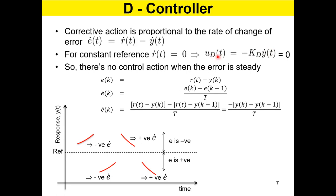For positive rate of change this generates a negative command; for negative response rate of change it produces a positive command. This controller does not look at the actual level - whether above, below, or at the reference. It only cares whether you are going to change from where you are now: whether you are trying to move up or move down from your existing position. It resists that motion.